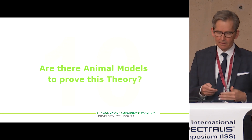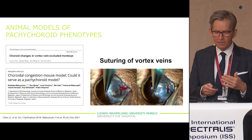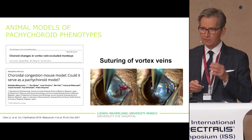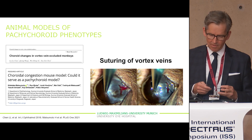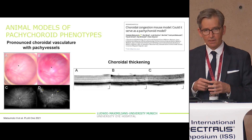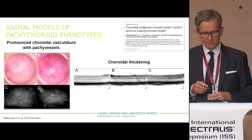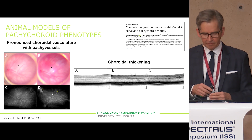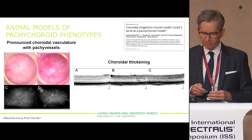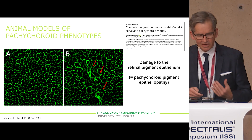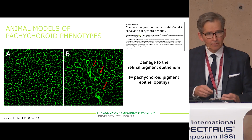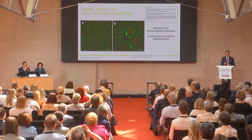To prove this theory, colleagues demonstrated it in an animal model by suturing vortex veins in mice and rabbits, and could show that after one week you can see the congestion, dilated vortex veins on OCT, thickening of the choroid, hollow veins, and immunohistochemistry even revealed damage of the retinal pigment epithelium, mimicking Pachychoroid pigment epitheliopathy.